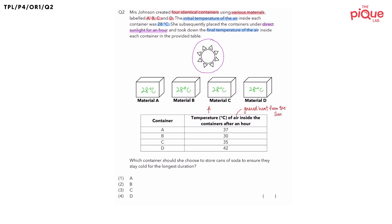Do you realize that the final temperature for all four containers are different? If they are different, do you think the air inside these four containers gained heat at the same rate? No — they must have gained heat at different rates. The reason is that the containers were made of different materials. The property of material we always talk about when we are on the topic of heat is heat conductivity. So the four containers have different heat conductivity.